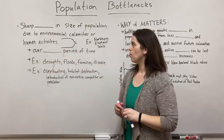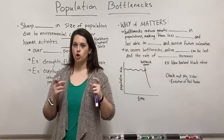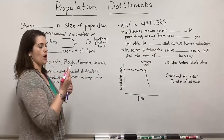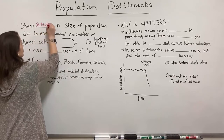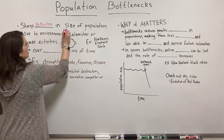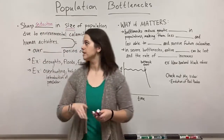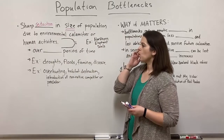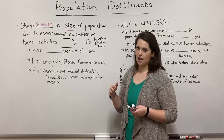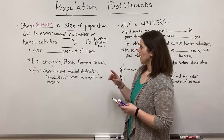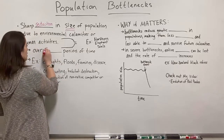First let's talk about what a bottleneck is. A population bottleneck is a very sharp reduction in the size of a population. This is due to either some kind of environmental calamity or some kind of human activity that really decimates the size of a population. It's important to realize that this happens over a very short time frame.